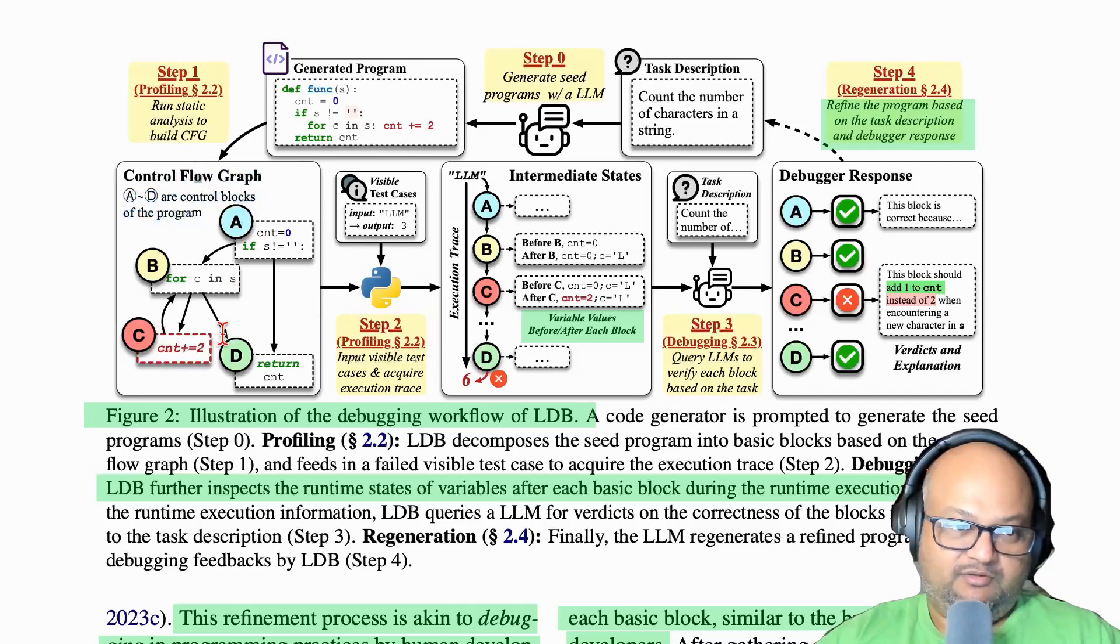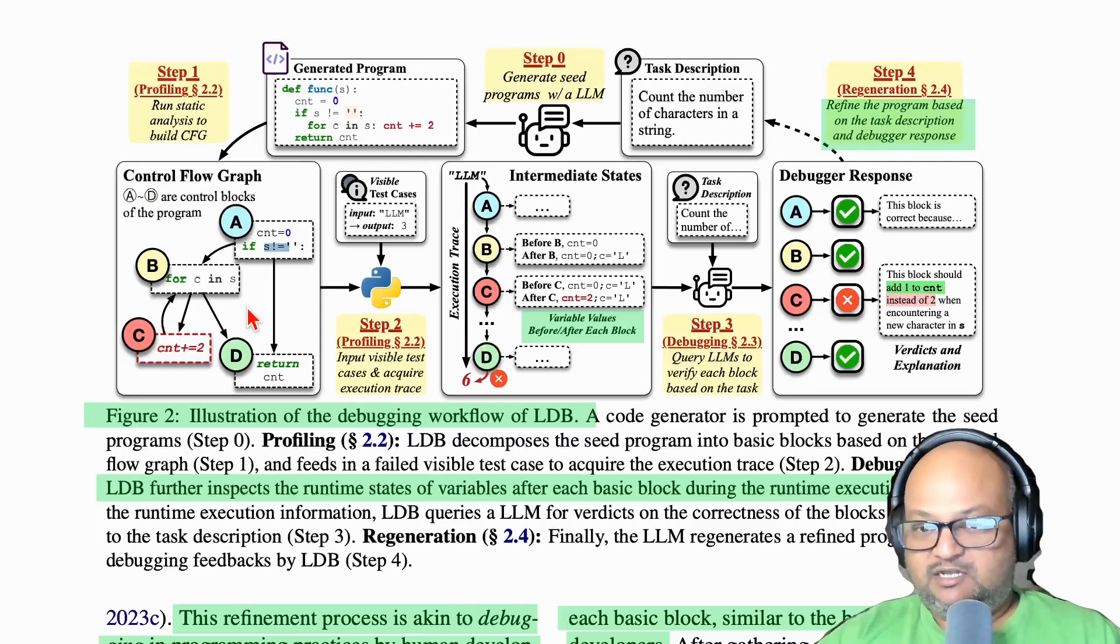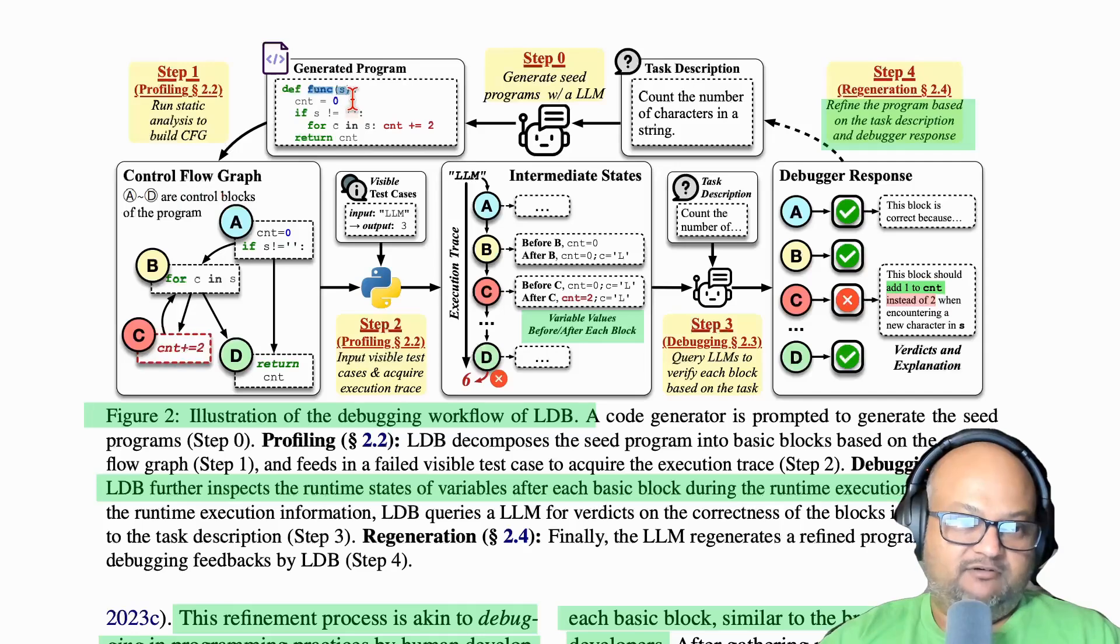Once you have the control flow graph, you can break out your program into basic blocks. A basic block is simply a chunk of code that within it executes in a straight line. Execution only ever enters a basic block from the beginning and only ever leaves from the end. Essentially, these are all the places in your code that are either sources of branches or targets of branches. Now you've broken your generated program into a control flow graph, which consists of basic blocks with arrows depicting control flow between them.